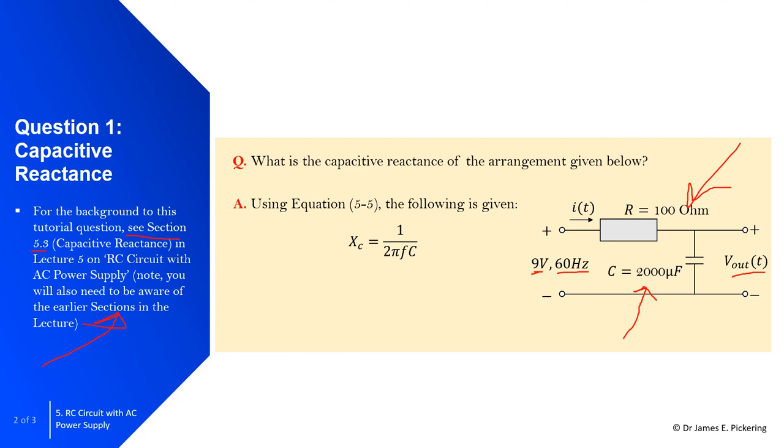Using equation 5.5 from the lecture, X_C for the capacitive reactance equals 1 over 2π multiplied by f, which is the frequency, in this case 60 hertz, multiplied by C, which is the capacitance. So in this case it's 1 over 2π × 60, and the capacitance is 2000 × 10^-6 because this is microfarads.